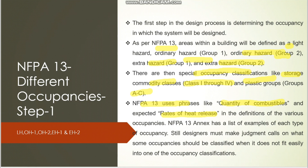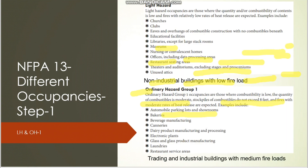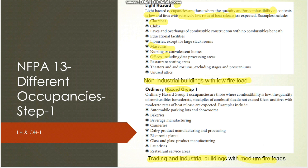NFPA 13 uses mainly two criteria: quantity of combustibles — how much material is in the building — and rate of heat release if fire occurs. Light hazard is a non-industrial building with low fire hazard: no manufacturing or processing plants. Both the quantity of combustibles and the rate of heat release are low. Examples include office buildings and museums.